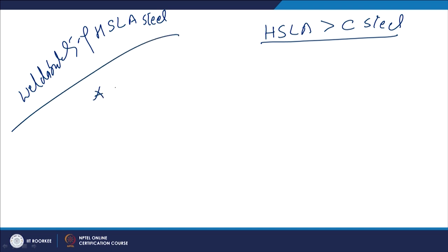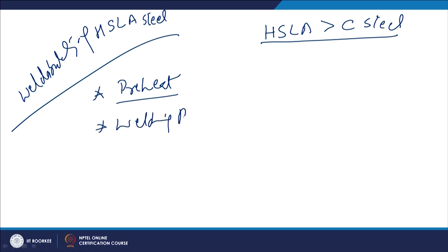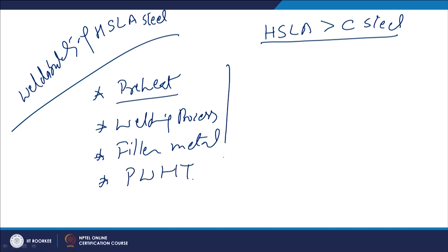Regarding the typical details of HSLA weldability, we need to discuss four different aspects: the kind of preheat to be used during welding of HSLAs; the welding processes available and related issues; the filler metals available for different categories of HSLAs; and which type of post weld heat treatment is needed and its purpose.